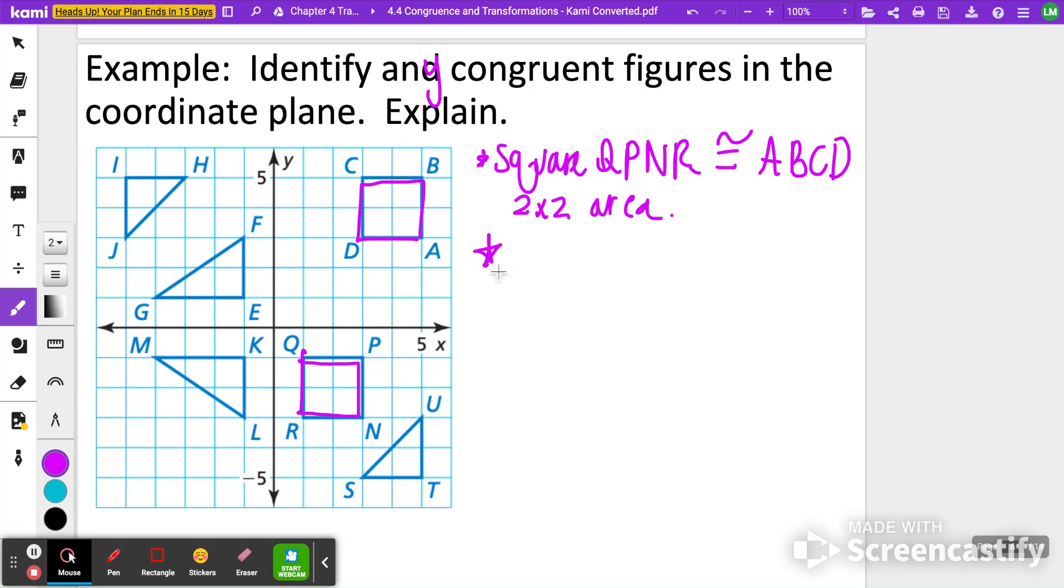Other ones that could be equivalent, we can try triangle STU. So triangle STU is congruent to triangle HIJ. They also have a 2x2 area. And one way they are the same figure is that they look like they might have had a 180-degree rotation done to them.